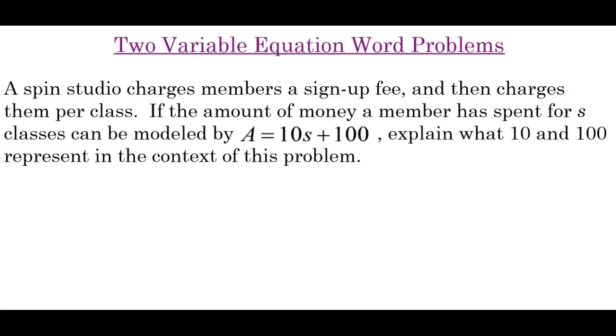Now, if this equation wasn't given to us in the word problem, we would say that 100 is the y-intercept. But that's not what they're looking for. They want to know what those values mean based on this word problem, in the context of the spin studio. So let's start with 100. As we said, we would typically say that this is the y-intercept. And the y-intercept happens when the x value is zero. But there is no x in this equation. We have to understand that s is in place of x here.